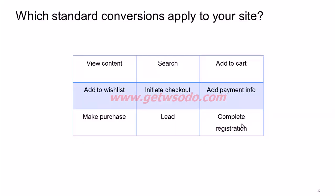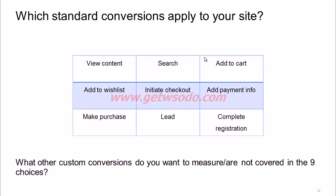Going back to the list of standard conversions, you can pick which ones apply to your site — not all will apply to all sites. For example, adding to cart is specific to an e-commerce site, so if you don't have one you wouldn't need add to cart, add to wishlist, initiate checkout, or make purchase. If you are an e-commerce site, many of these will apply. If you're not, you'd probably just need lead, complete registration, view content, or search. If there are custom conversions you want to measure that aren't covered here, you can set up a custom conversion for those as well.